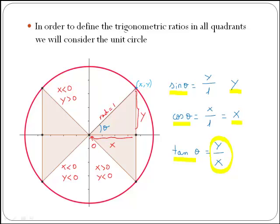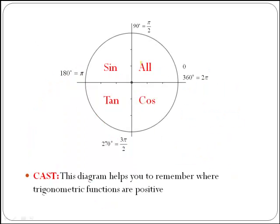With this, you can deduce the following diagram that will help you remember where trigonometric ratios are positive. In the first quadrant, all trigonometric ratios are positive — sine of theta is positive, cosine of theta is positive, and tan of theta is positive. In the second quadrant, only sine of theta is positive, while cosine of theta is negative and tan of theta is negative.